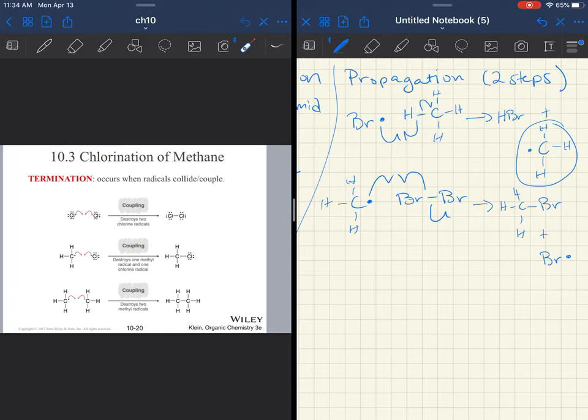But it will also make a bromine radical. So this is a chain reaction. Once you have one bromine radical and it gets this reaction started, bromine is formed in the propagation step. So once you've initiated a little bit, this reaction can keep itself going.